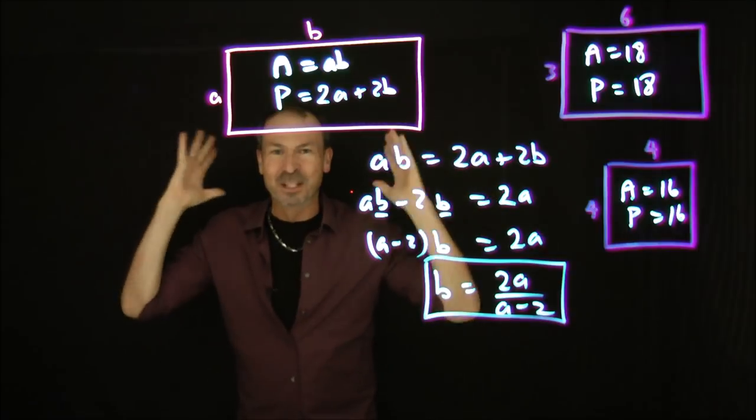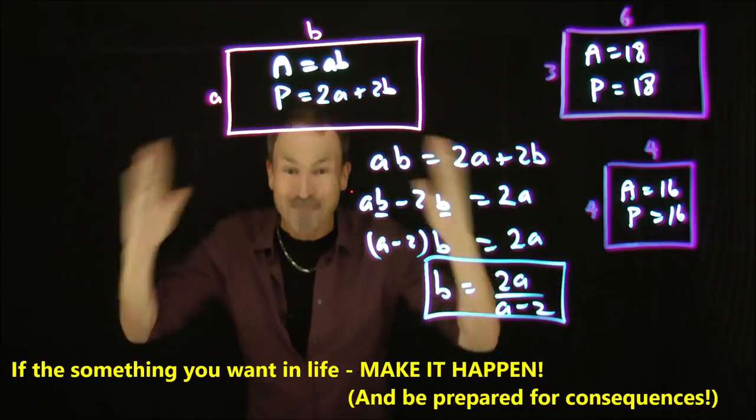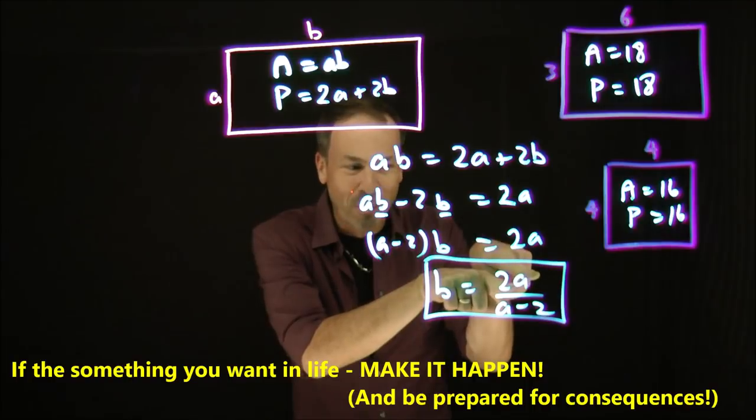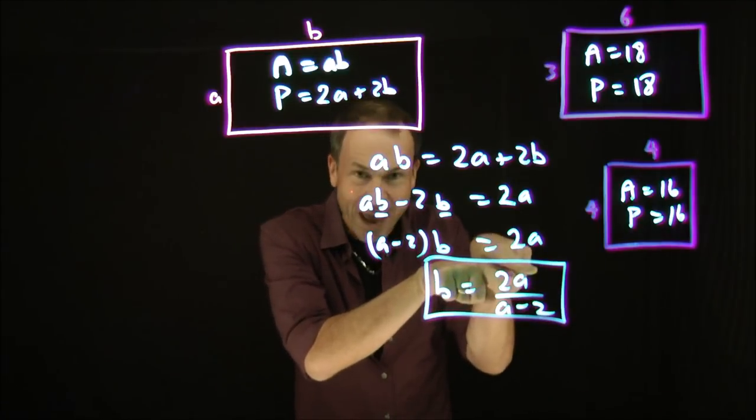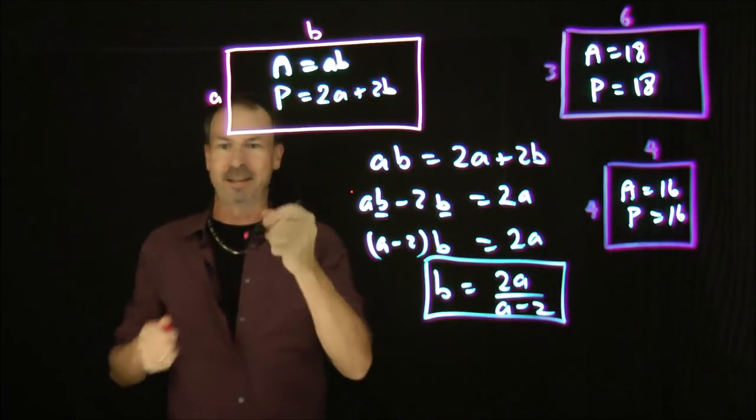Here's a principle for solving mathematical puzzles and puzzles in life. If there's something in life you want, just make it happen and deal with the consequences. I want this top line to be a multiple of A minus two, not a multiple of A, but a multiple of A minus two. So I'm going to make that happen.